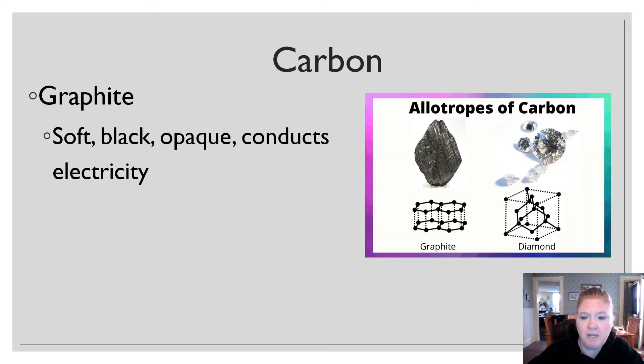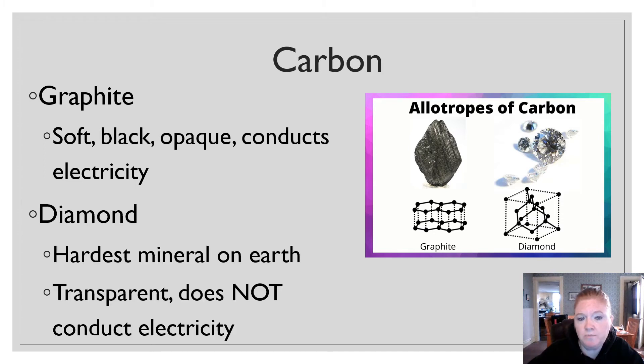Then we have carbon. Carbon has a lot of allotropes. The two most common ones that are referred to are graphite and diamond. Graphite is what's used in pencils. It's the lead of pencils. It's soft. It's black. It conducts electricity. Diamond, on the other hand, hardest mineral on earth. It's transparent, and it does not conduct electricity. But they're both made exclusively of carbon. So that's important to remember.